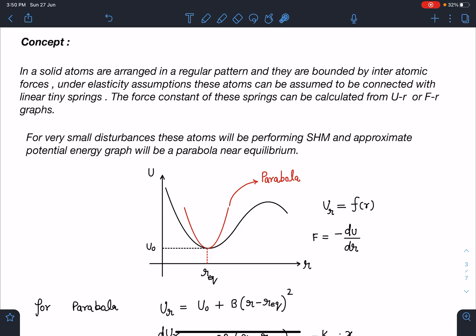For SHM, the potential energy graph must be a parabola. So whatever graph is given to us, we can approximate it to the nearest parabola near the equilibrium point. This is the first point, because we are treating this as approximating this as a simple harmonic motion. For simple harmonic motion, the potential graph will always be a parabola.